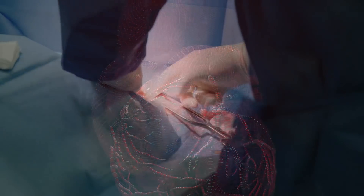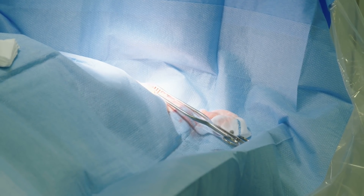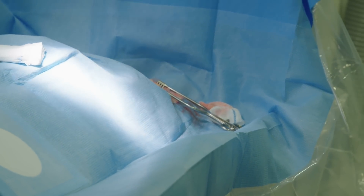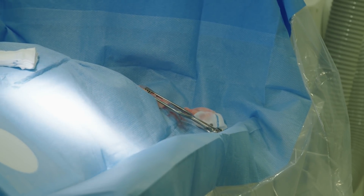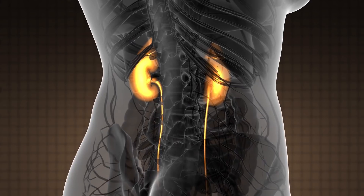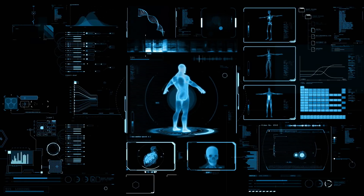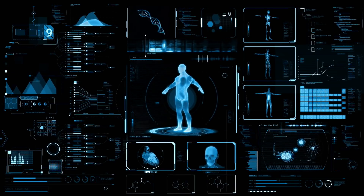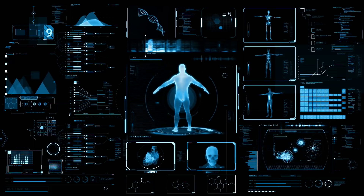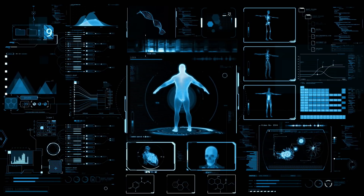It turns out you can transplant an organ from someone in their 70s into a young person and it works just fine. You can also transplant a young kidney into an older person and it stays strong. With zero-gravity biomedical science, Elon Musk could land on Mars at the age of 70 with another quarter century ahead of him. What is possible after that? We'll cover that in the next lesson. Thank you so much for watching and for your support. Please don't forget to like and subscribe. Ad Astra Proterra.